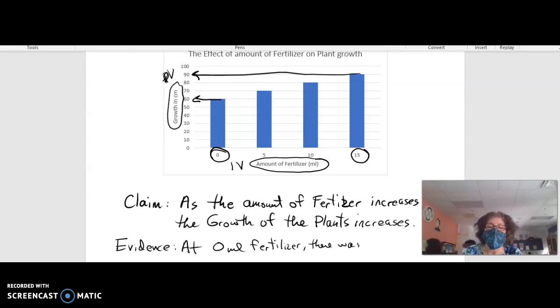So how do you put that in a sentence? You would do this. You would say at zero mils of fertilizer, there was 60 centimeters of growth. So I connected these two points, my lowest value of the IV with whatever the DV was at that point.